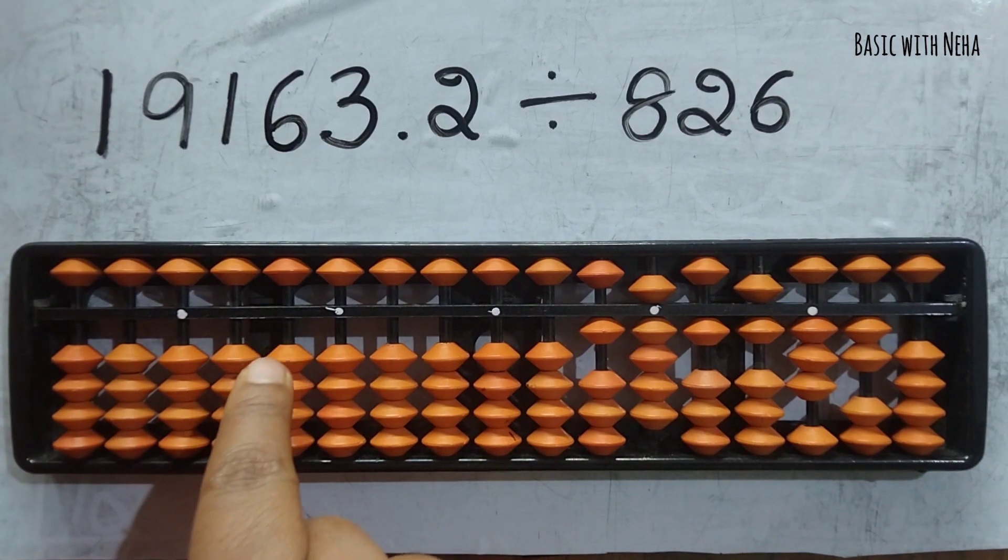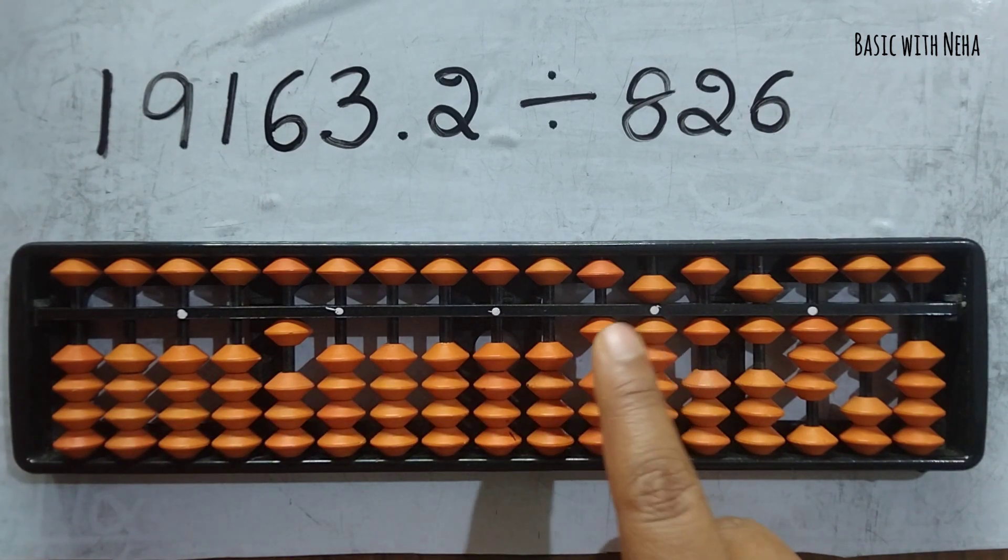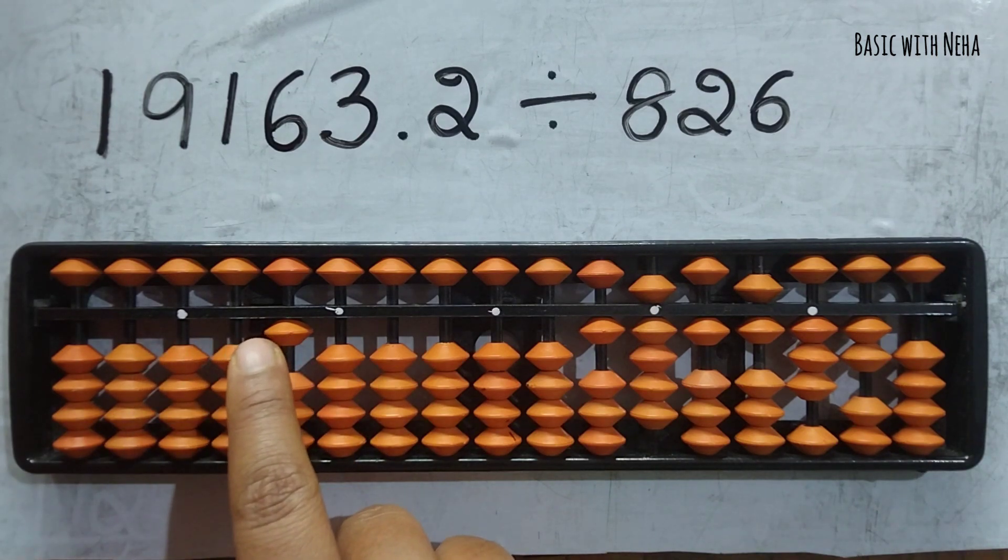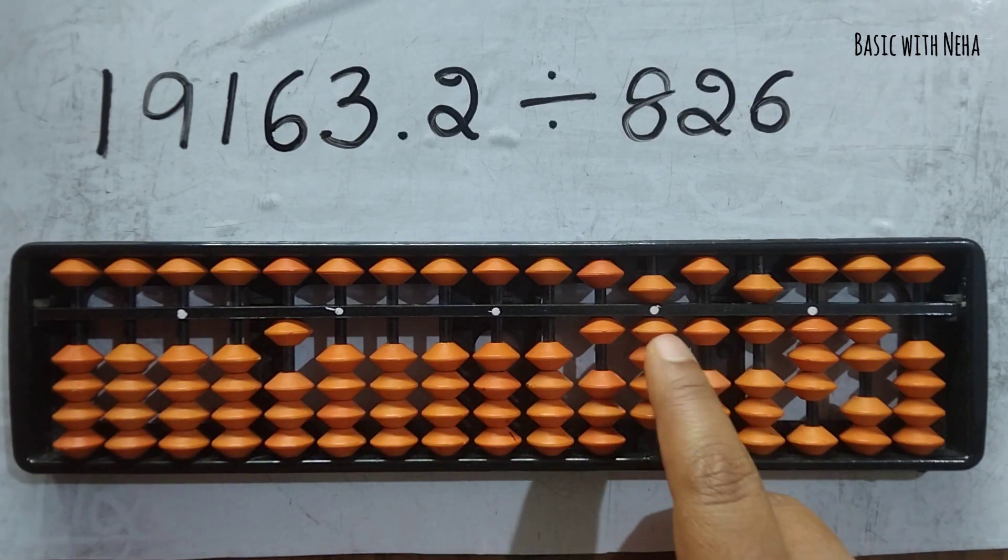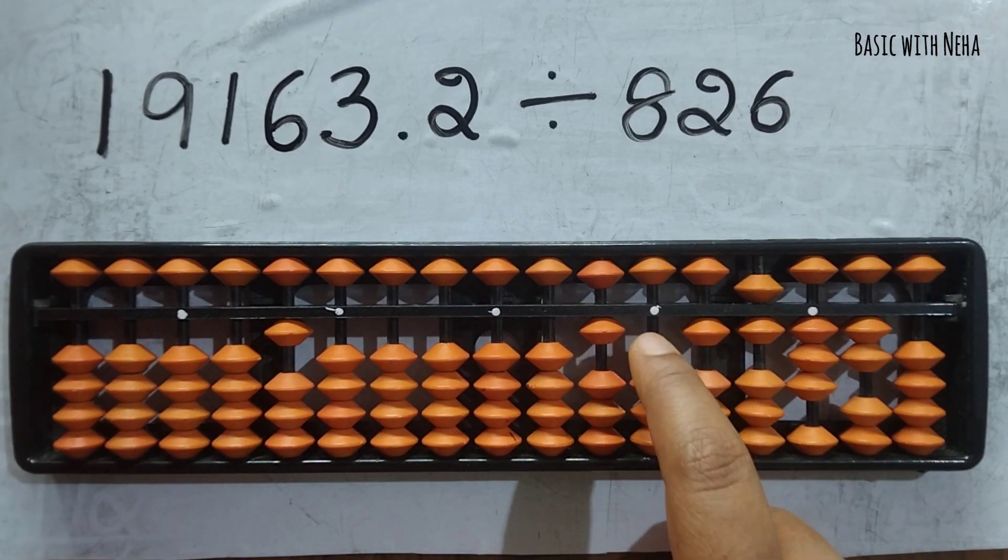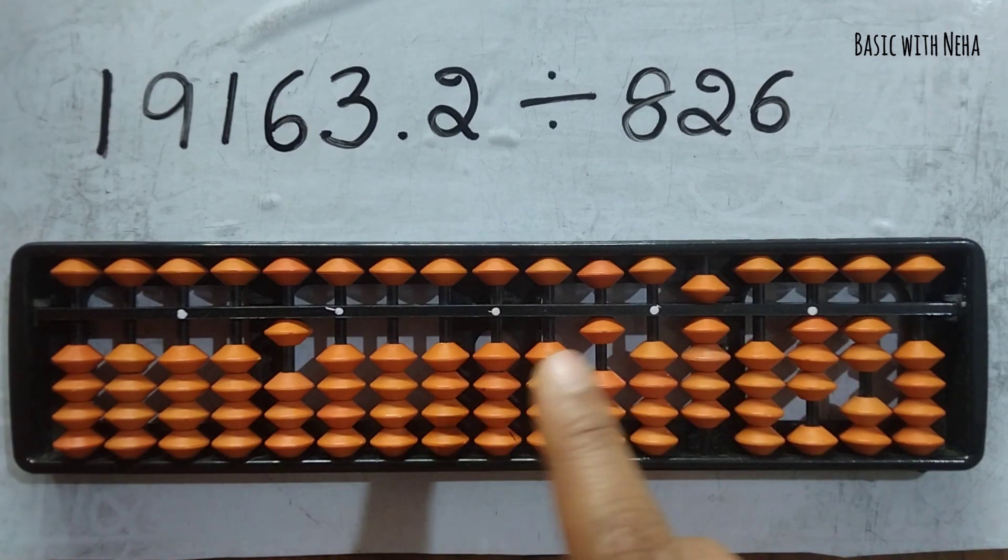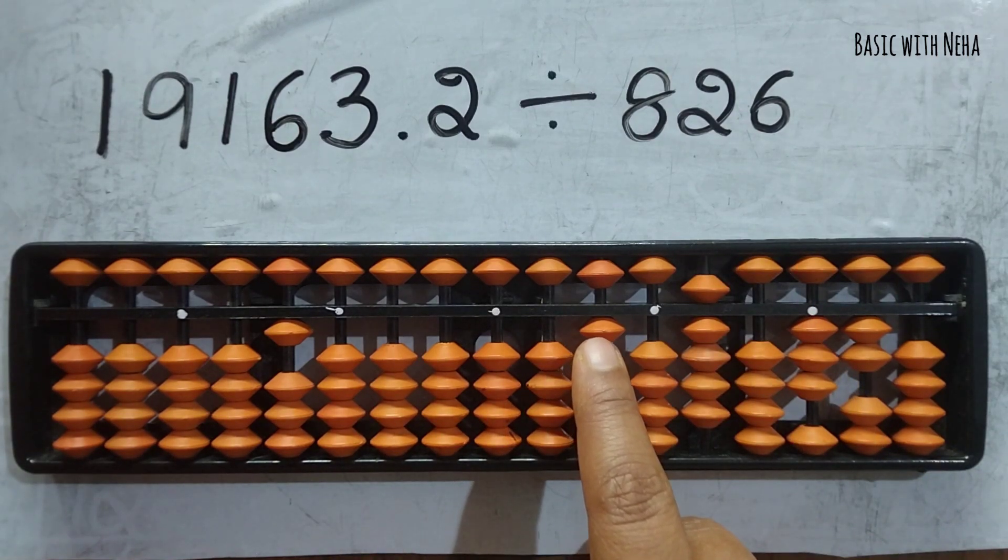I don't know the tables of 826, so I'll take 826 ones: I'm going to remove 826 from the thousands place, four rods. 8 minus 2 is minus 10, plus 8 and minus 6.